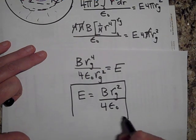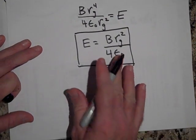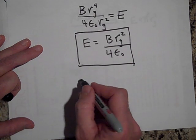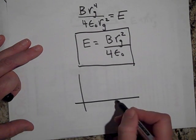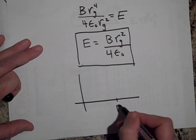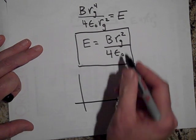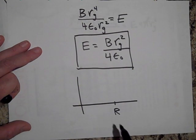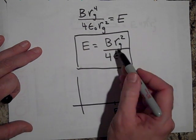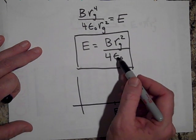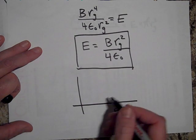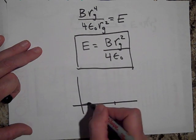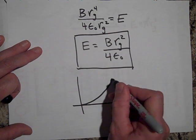So as you go outward — at least up to radius R — what happens to the field? Since B and epsilon-naught are constants, the electric field is proportional to r squared, so it grows quadratically as you move outward inside the sphere.